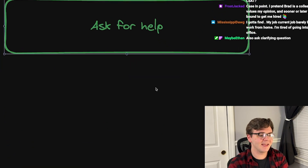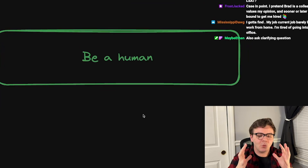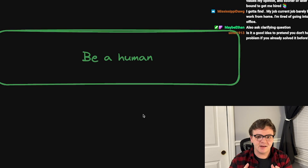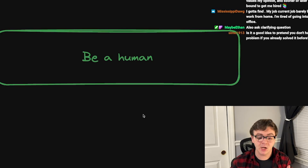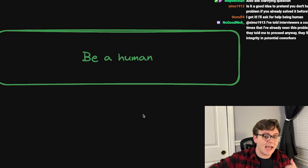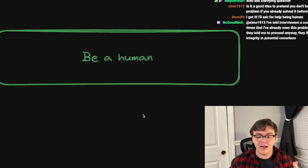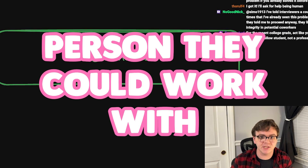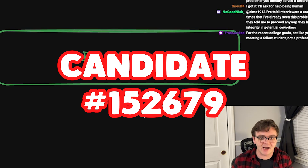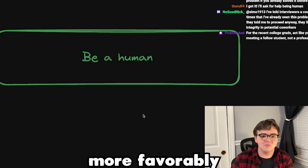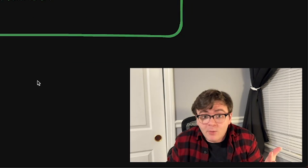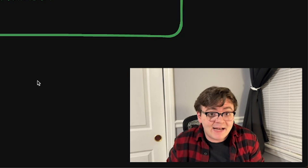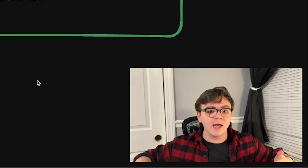You should not walk into the interview with the mindset that they're looking for a code machine. You don't want to be really good ChatGPT. You want to be a person that this person could see working alongside and enjoying that process. If you're treating it like just a casual interaction in the office, it goes a long way in them seeing you as a person they could work with rather than candidate number 152679. Someone likes you — they're going to score you more favorably. Take your deep breaths before the interview and try to think of it as a normal conversation.